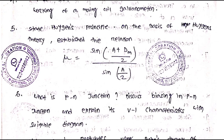Let's practice this question: State Huygen's principle. On the basis of Huygen's theory, establish the relation mu equal to sin((A + dm)/2) divided by sin(A/2).